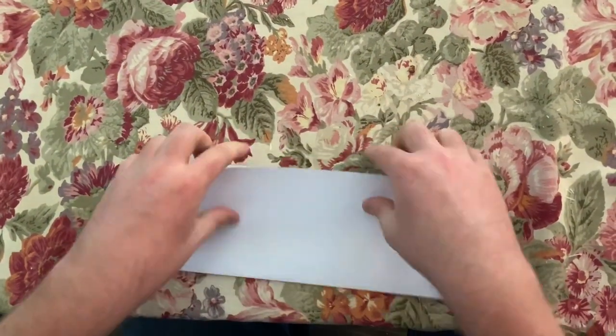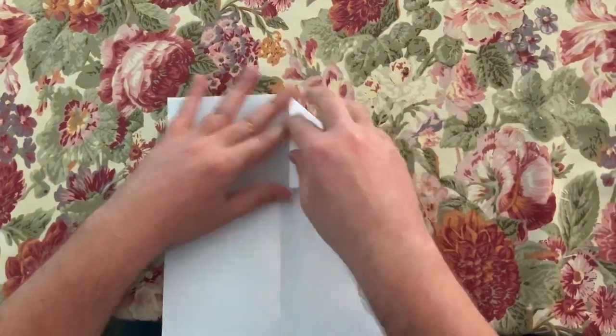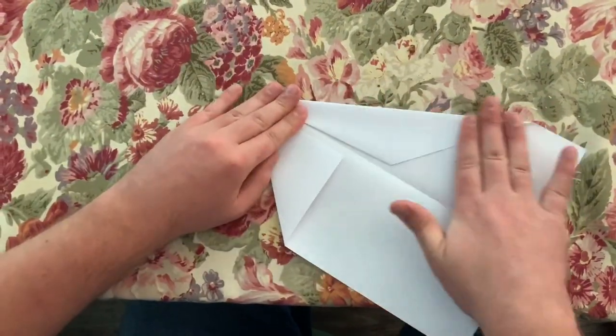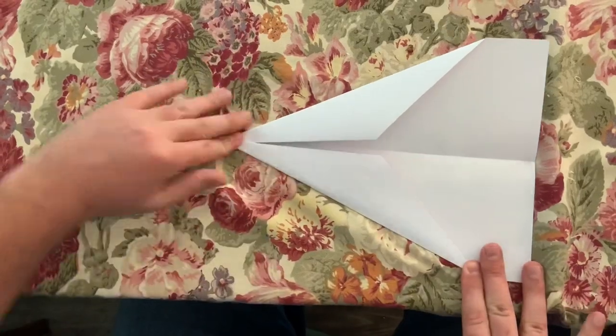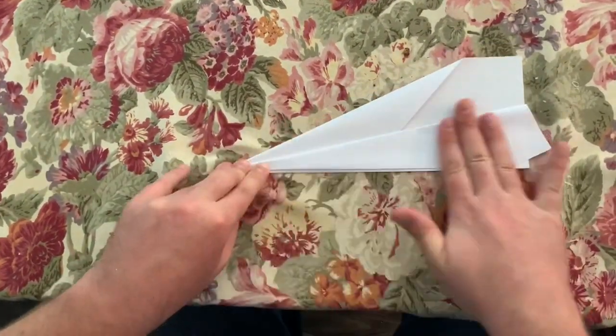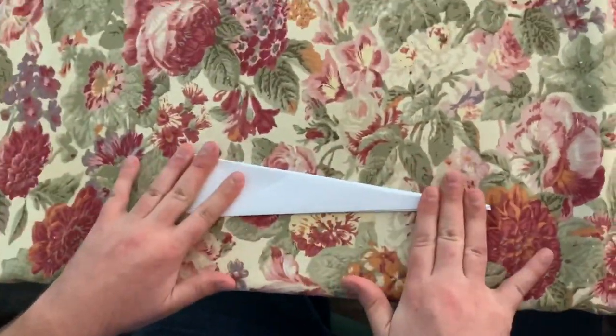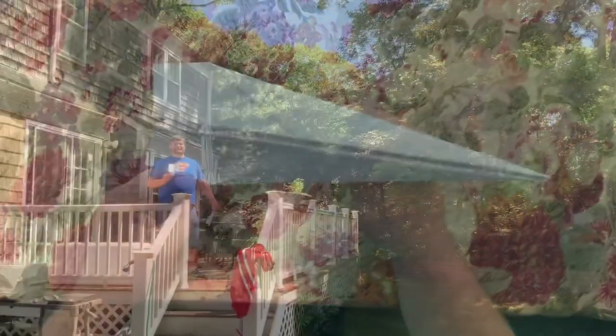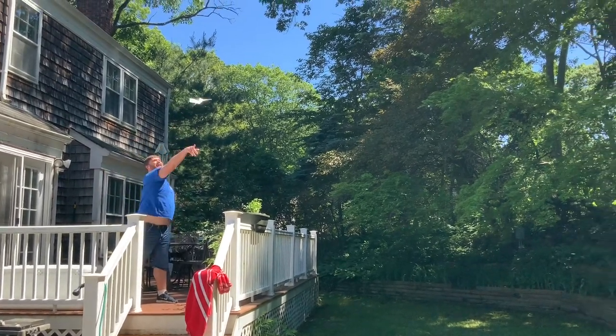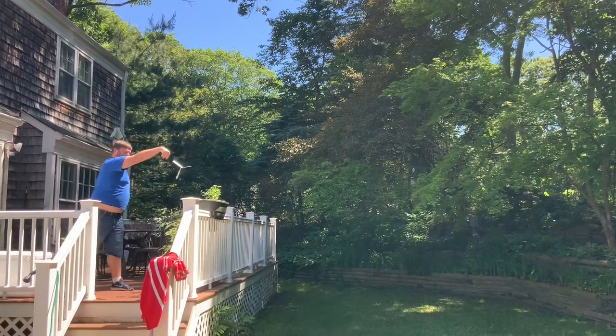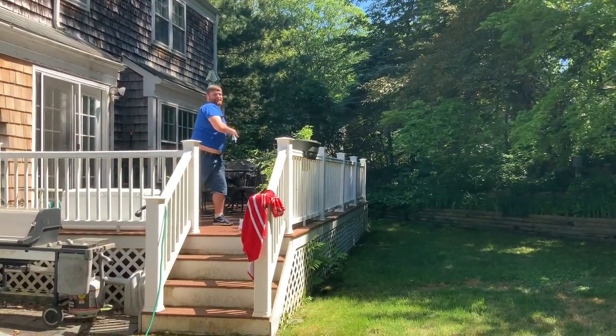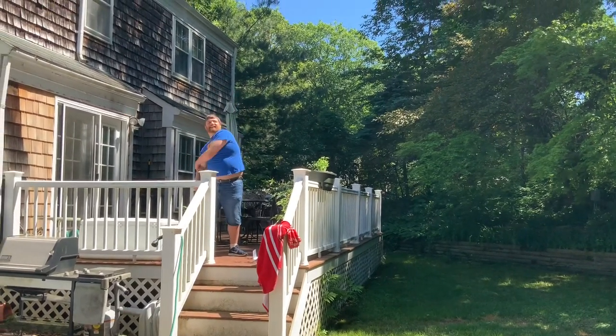Now for a paper airplane, you fold it in half in the middle, make two triangles at the top, followed by two other triangles, just like this. See? Then we fold it back in half and fold the wings down just like this. And now you're ready to fly.